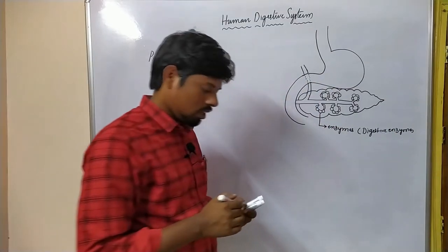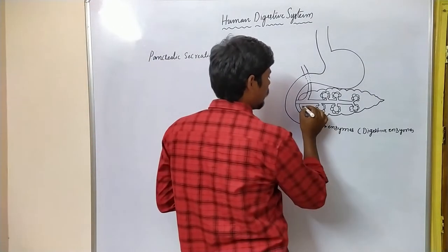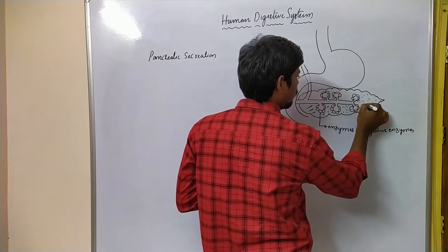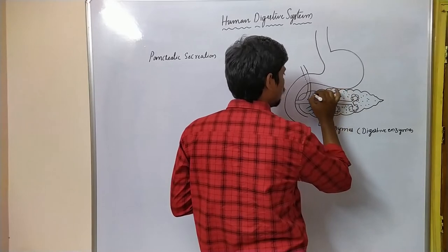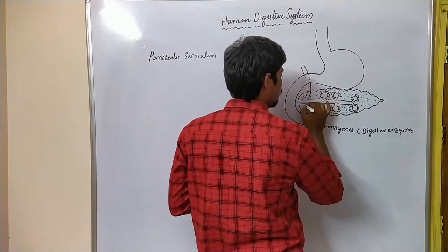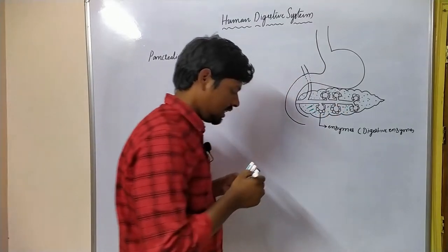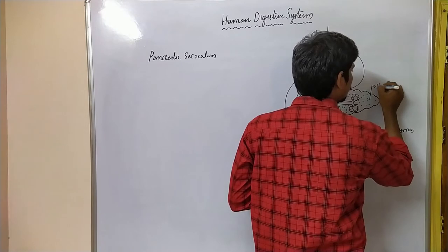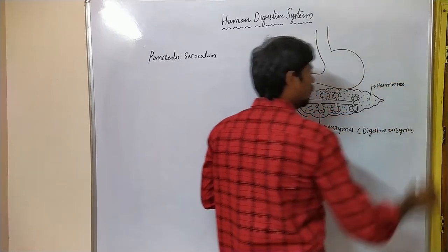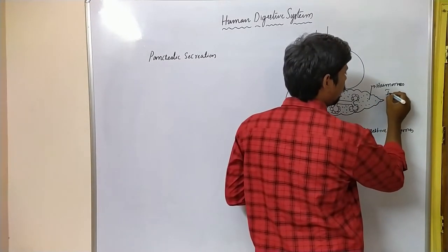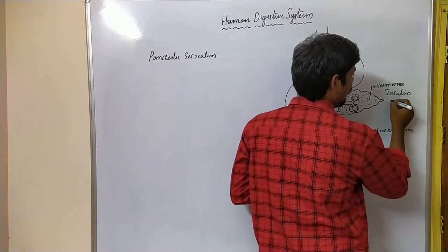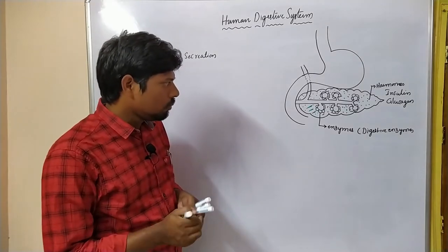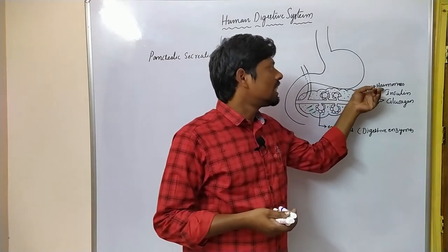The rest of the part of the pancreas — you can see this green area — produces the hormones, hormones like insulin and glucagon.